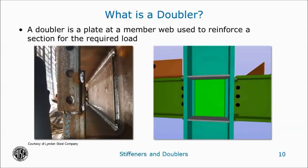To first understand why doubler issues occur on projects, it's important to know exactly what a doubler is and why it is required. A doubler is a plate in a member, such as a beam or column, used to reinforce the member for the required load. Although it can certainly be used to reinforce for such limit states as web yielding, web crippling, and web buckling, today's presentation is mainly going to focus on doubler plates used to reinforce a column for shear in a column panel zone.